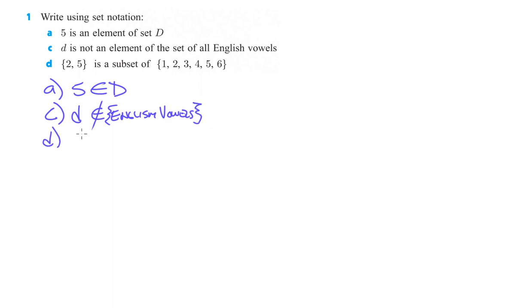And then D, {2, 5} is a subset of this set here. So 2, 5 is a subset, that's the little C with the line under it, of {1, 2, 3, forgot 4, 4, 5, and 6}. Okay, moving on to number 2.